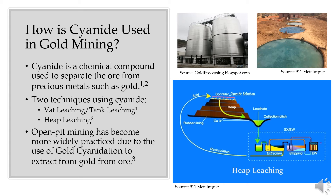The gold will then be chemically extracted from this liquid. The second technique is called cyanide heap leaching. This technique is often used for low-quality ore, or to reprocess waste materials from other extraction methods, such as the tailings from vat leaching. You can see a diagram of this process on the lower right-hand side of the slide.